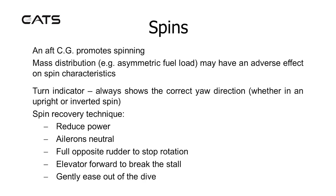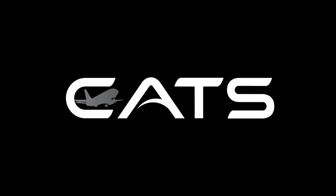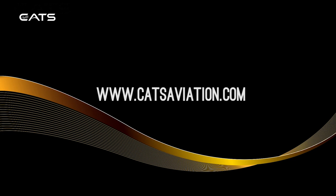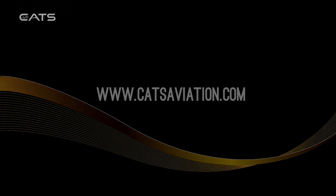The turn indicator always shows the correct yaw indication whether you are in an upright or inverted spin. Spin recovery technique — always refer to the flight manual. However, the general method is: reduce power, ailerons neutral, full opposite rudder to stop rotation, elevator forward to break the stall, and gently ease out of the dive.